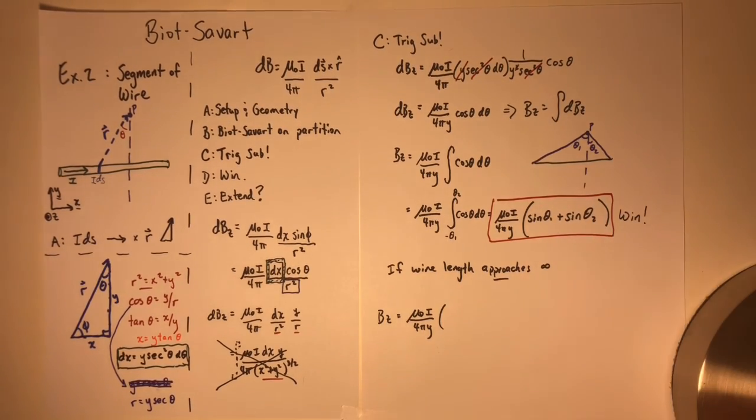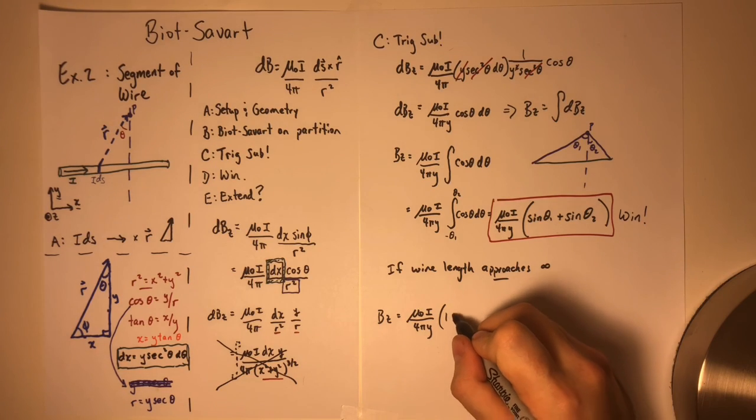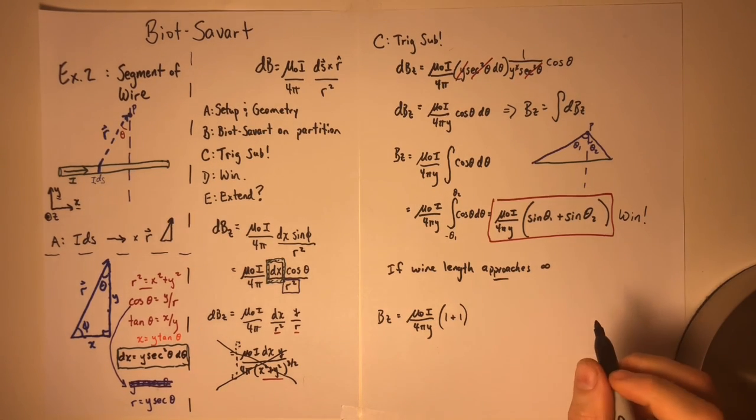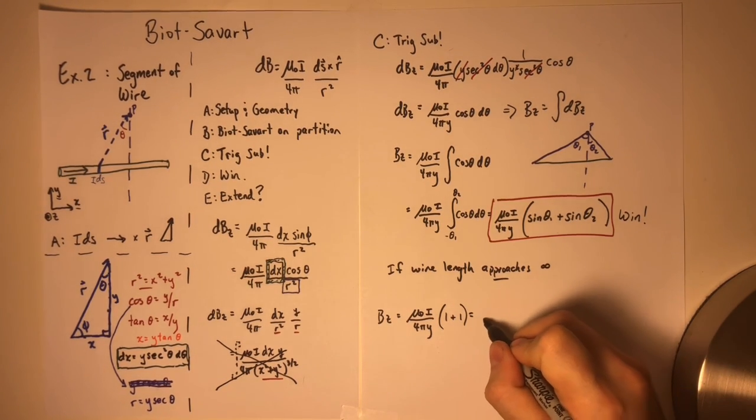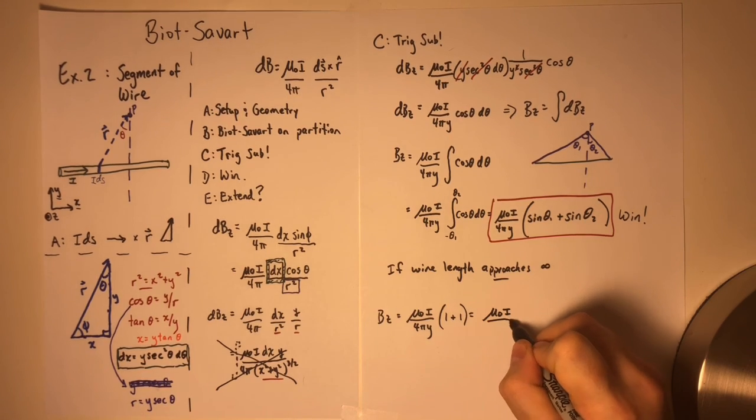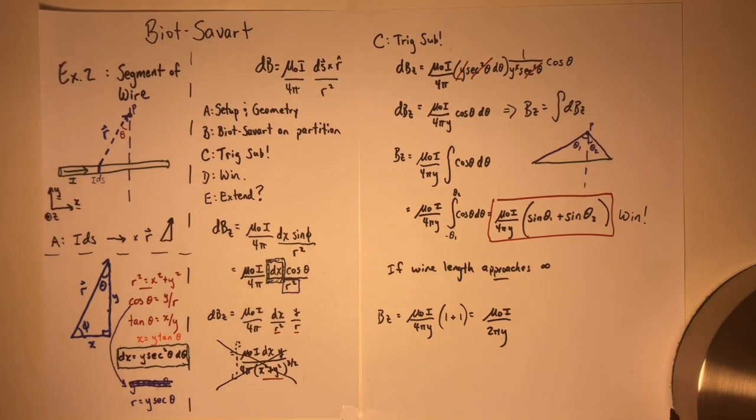As theta1 and theta2 tend towards 90 degrees, then both of those expressions tend towards just one and one. So we end up with mu naught i over 2 pi y.